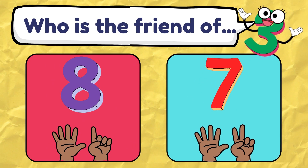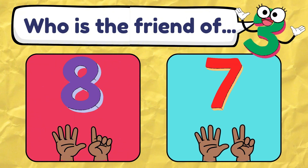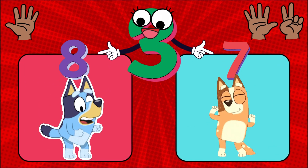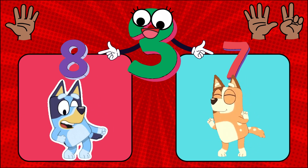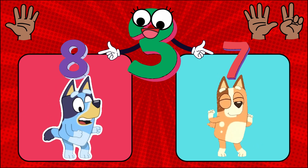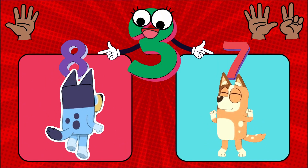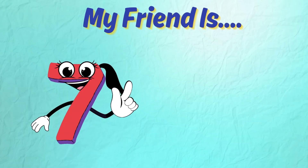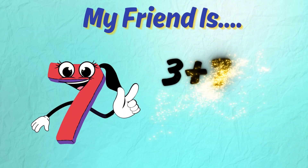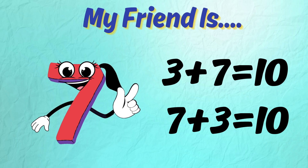Next up. Who is the friend of 3? Is it 8 or 7? Do the matching dance! The friend of 3 is 7 — did you get it right? 3 plus 7 equals 10. Switch the numbers and 7 plus 3 also equals 10.